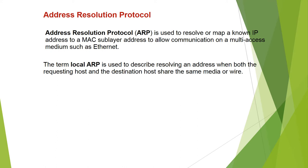ARP — the Address Resolution Protocol — is used to resolve or map an unknown IP address to a MAC sublayer address to allow communication on a multi-access medium such as Ethernet. The term local ARP is used to describe resolving an address when both the requesting host and the destination host share the same media or wire.